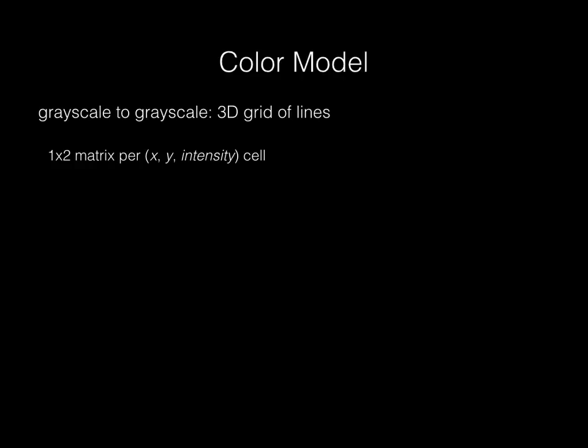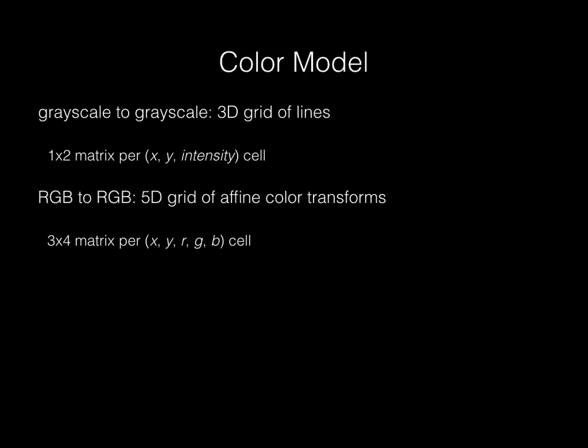The natural extension to color images would be to use a 5D xy RGB bilateral grid, each containing an affine color transform. That is, store a 3x4 matrix for each xy RGB cell. However, this model is too rich. 5D space is huge, and no cell will have enough data to fit a 3x4 model.